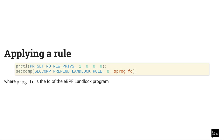The usual workflow to apply a rule is: first, restrict the own process to not gain any new privilege changes, then pass the prog file descriptor returned from the BPF syscall to seccomp. After that, the process as well as its child processes will be restricted.